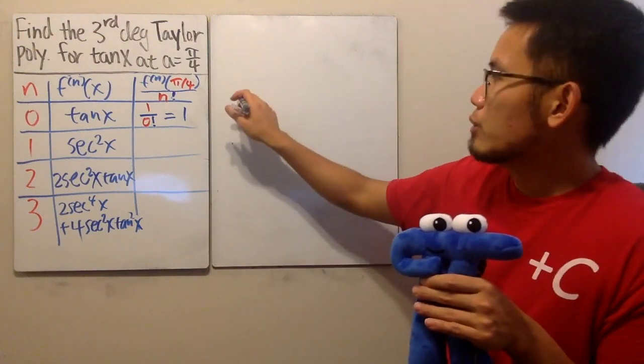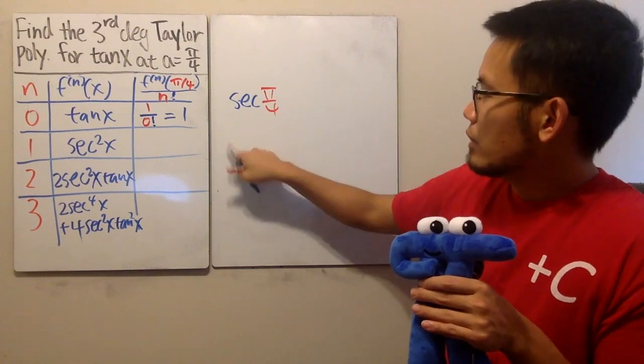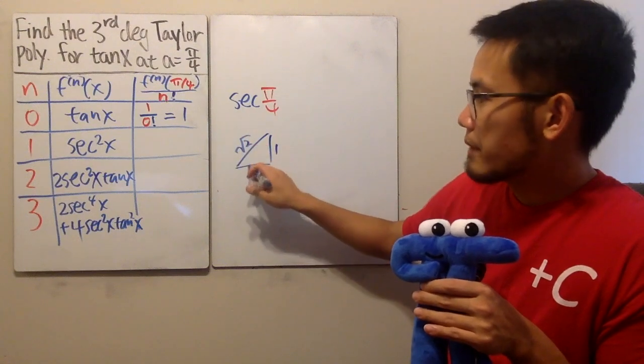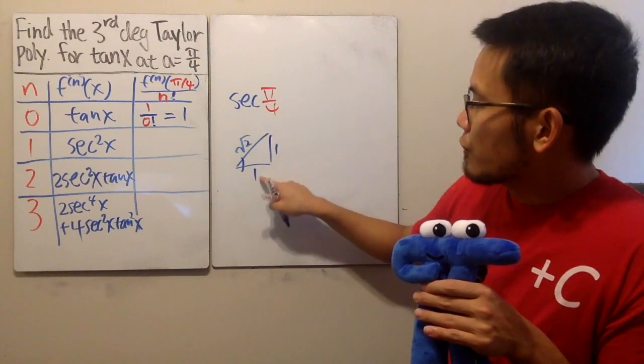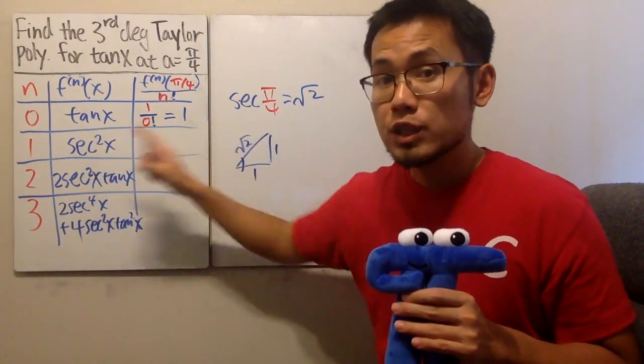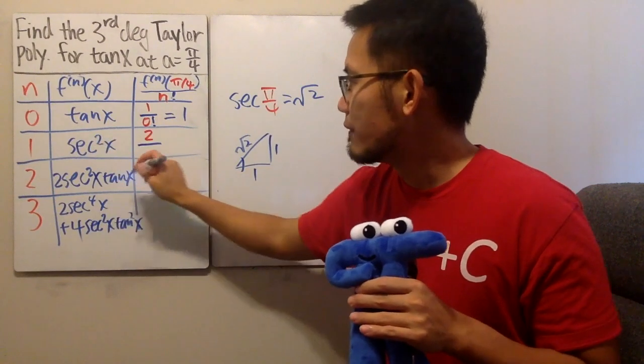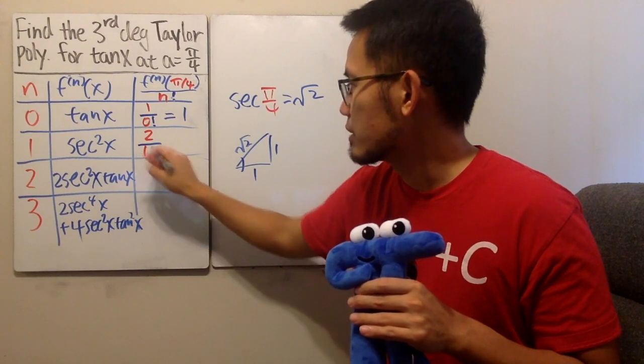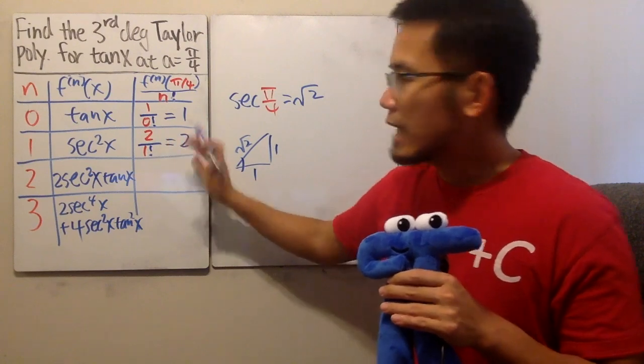Remember, secant of pi over 4 is what? Look back to your 45, 45, 90 triangle. This is 1, 1, square root of 2. So secant of pi over 4 is hypotenuse over adjacent, this is square root of 2. But we will have to square that, so we actually end up with a 2. So, we have a 2 on the top, and this is over 1 factorial. All in all, we reduce that, it's equal to 2.